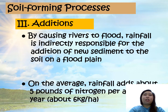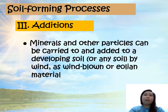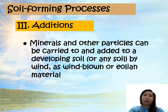On average, rainfall adds about 5 pounds of nitrogen per acre per year, which is about 6 kilograms per hectare per year. Minerals and other particles can also be carried through and added to a developing soil by wind as windblown or aeolian material.